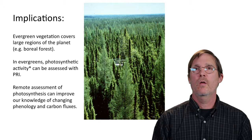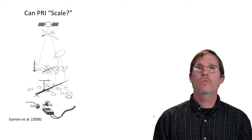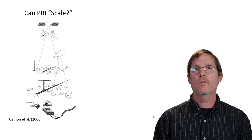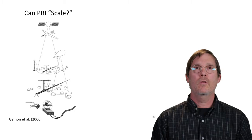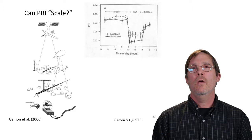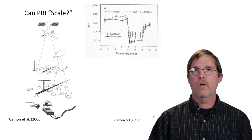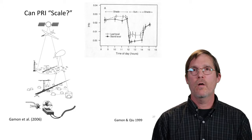In the last part of the talk: how well does PRI scale if we go from the leaf level — where we might measure photosynthesis in a gas exchange chamber — to a tram measuring a landscape, to aircraft and satellite measurements? Can we measure a coherent signal at all these different scales and relate it to photosynthesis? It turns out that for a closed stand with a solid mass of vegetation there's a pretty good relationship between what we measure at the leaf scale and the stand scale.